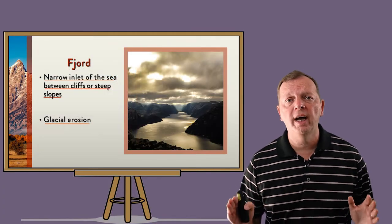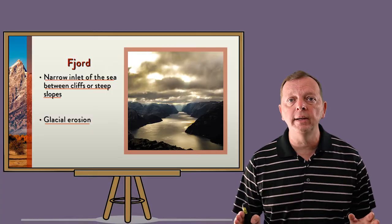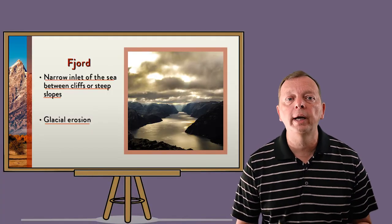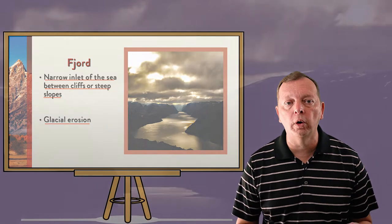When glaciers cut narrow steep valleys into the sea, the inlets they create are called fjords. Fjords can be found in Alaska, Chile, Norway, New Zealand, and just a few other places in the world.